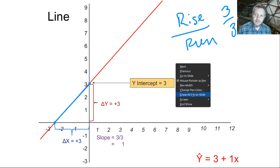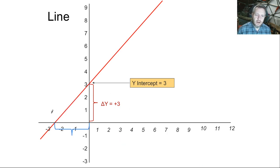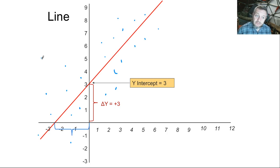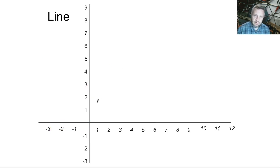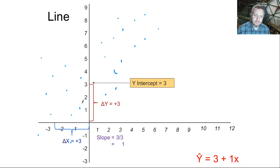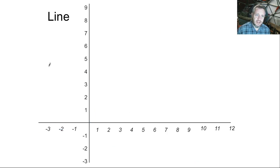Maybe the line fits the data that well, or maybe the line fits the data really terribly. The correlation coefficient actually gives us a good idea of how well the line fits, which the regression line does not. So they have advantages and disadvantages.